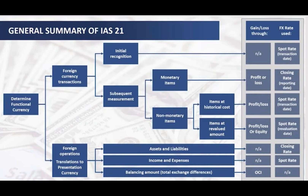For foreign currency transactions, initial recognition occurs when the transaction takes place, and subsequently we must perform subsequent measurement. Subsequent measurement has an impact on the balance sheet data when exchange rates change. For example, one year ago, one dollar was equal to 85 BDT. If the rate changes, subsequent measurement is needed.